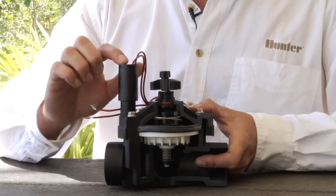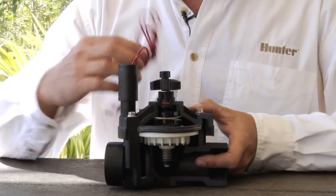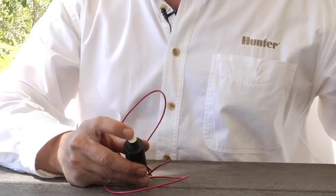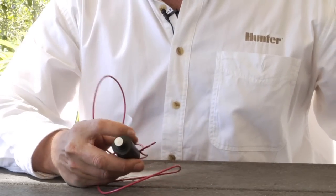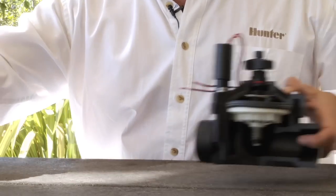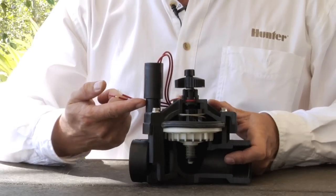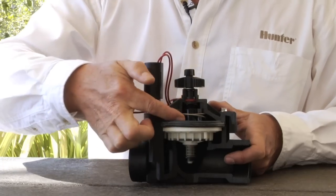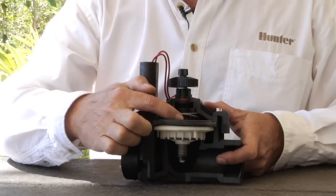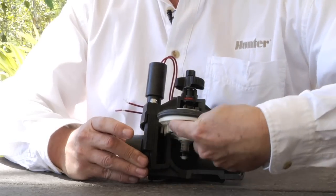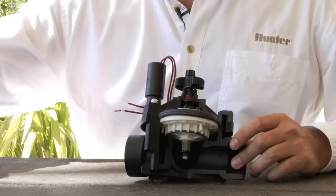Beyond that, we have the solenoid, and that's what receives the electricity from the controller. The solenoid has a plunger on the bottom. When it's electrically activated, the plunger will raise up. And when it raises up, that little rubber gasket comes off of its port and allows the water to go down the exhaust port, thus decreasing the pressure on top of the diaphragm, allowing the diaphragm to move up and allowing the water to flow out to the field.